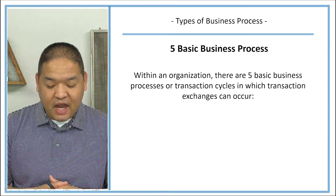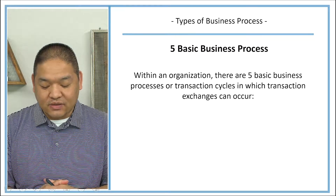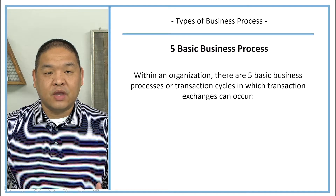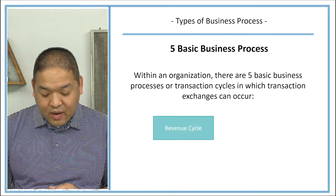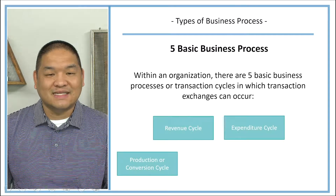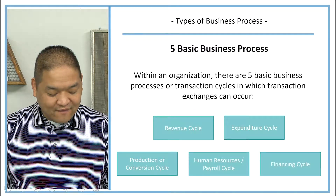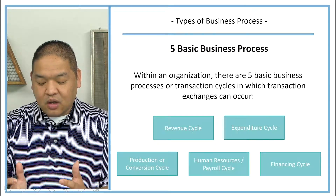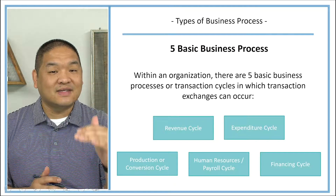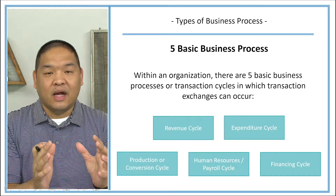There are basically five basic business processes or transaction cycles in which transaction exchanges can occur. The five we're looking at are: the revenue cycle, the expenditure cycle, the production or conversion cycle, the human resources or payroll cycle, and the financing cycle. Within each business process, we have activities and tasks that are interrelated and interconnected to one another.